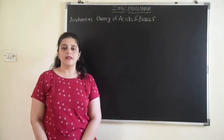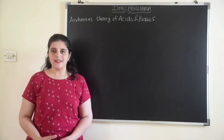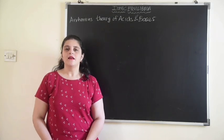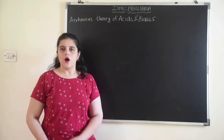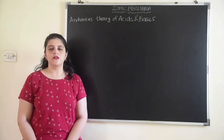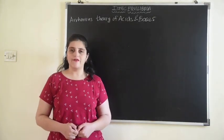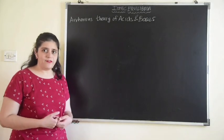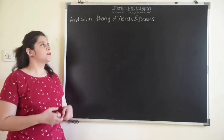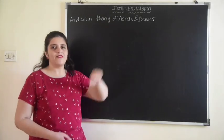Hey everyone, you have been learning about acids and bases since your lower classes. You have learned that acids are substances which are sour in taste and they turn blue litmus paper red. On the other hand, bases are substances which are bitter in taste and they turn red litmus paper blue. But this is not the actual or real definition of acids and bases. We need a proper definition. So the very first theory was proposed by Arrhenius, and that theory is known as Arrhenius theory of acids and bases.